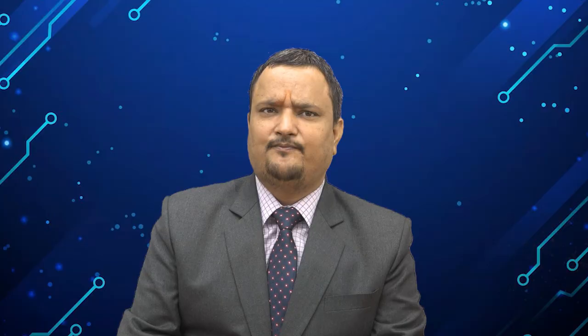After installation of NetBeans in your system, now you need to install the Tomcat server in your Windows machine. First, you need to download the Tomcat server from the official site of Tomcat. Here is the link: tomcat.apache.org/download-10.cgi. From here, you can download it.